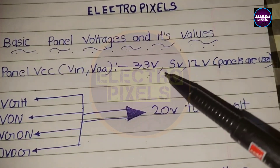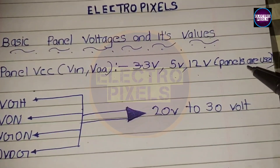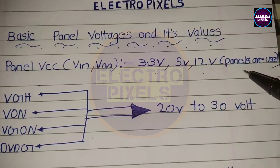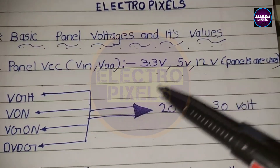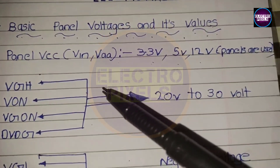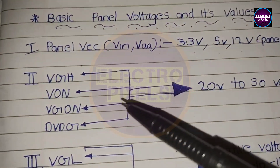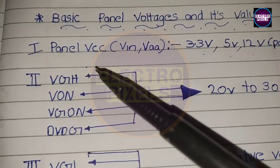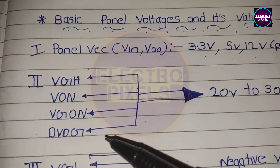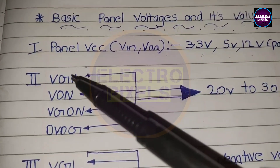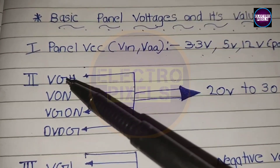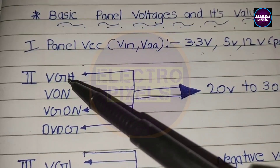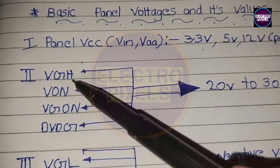The second one is the VGH voltage, which is also called as VON, VGON, DVDG, etc. Its output voltage ranges from 20V to 30V. It may vary depending on different panel manufacturers.